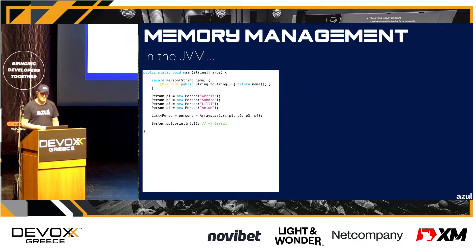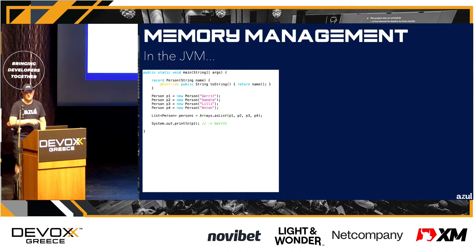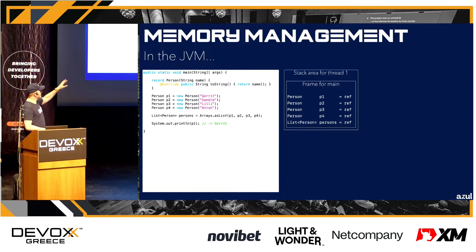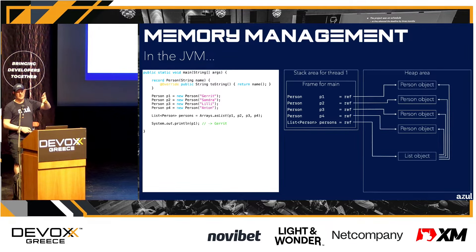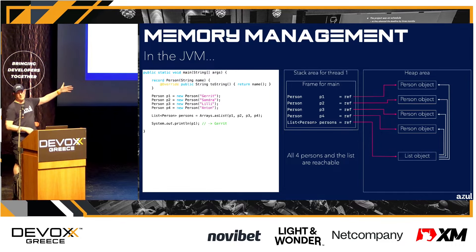If we take a look at this code — it's pretty simple — we have a couple of classes that are objects referenced from a person record. On the stack, there's a stack frame created for the main method, and you see the references for person p1 to p4 and for the list of persons. In the heap, we have the actual objects, and the list points with references to those persons because they are part of it — they're all reachable from the stack.